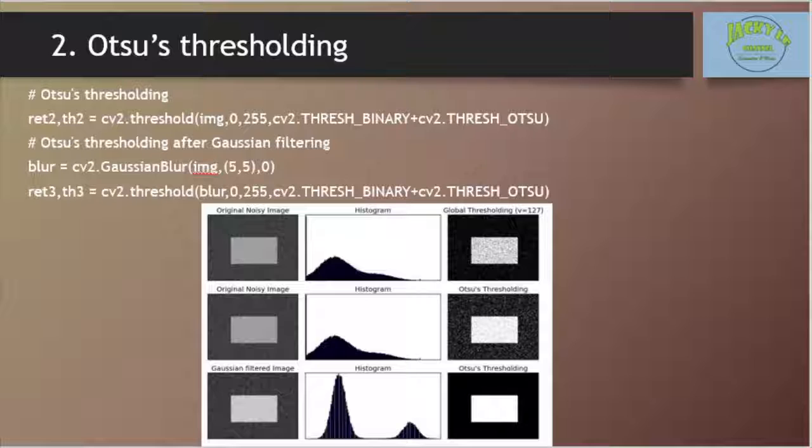The answer is trial and error method. But consider a bimodal image. In simple words, a bimodal image is an image whose histogram has two peaks. For that image, we can approximately take a value in the middle of those peaks as the threshold value.